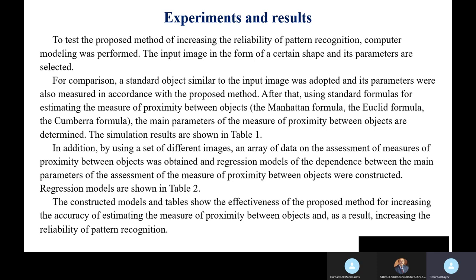To test the proposed method of increasing the reliability of the pattern recognition, computer modeling was performed. The input image in the form of a certain shape and its parameters were selected. For configuration, standard objects similar to the input image were adopted and their parameters were also measured in accordance with the proposed method. After that, using standard formulas for estimating the measure of proximity between objects, for example Manhattan form, Euclidean form, and Canberra form, the main parameters of the measure of proximity between objects are determined. The simulation results are shown in tables 1 and 2.